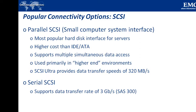Next is Serial Attached SCSI (SAS). It is a point-to-point serial protocol that provides an alternative to parallel SCSI. The newer version, SAS 2.0, supports data transfer rates up to 6 GB per second. Similarly to how SATA replaced PATA, Serial Attached SCSI has largely replaced parallel SCSI in modern systems.